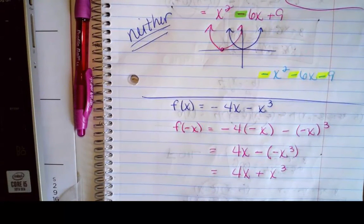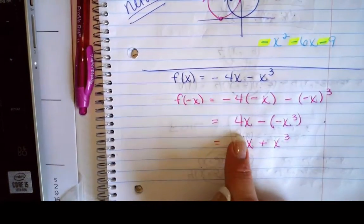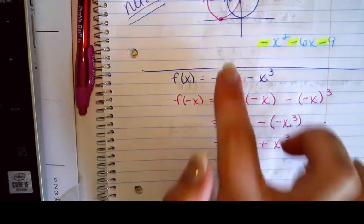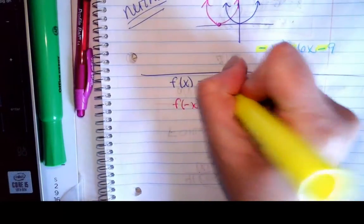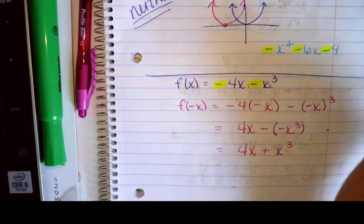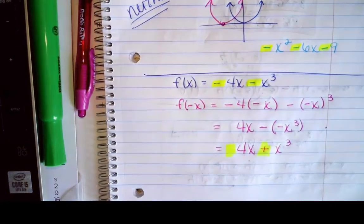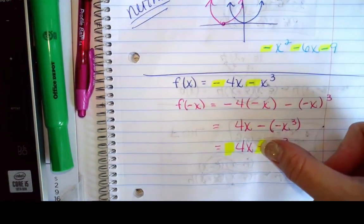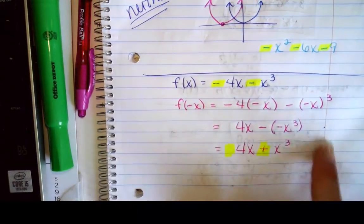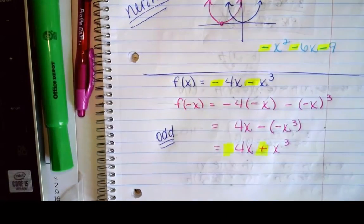Now I need to decide if it's even, odd, or neither. For an even function I would have gotten the exact same thing back — I'd need negative 4x and negative x cubed, but I don't have that. For an odd function, all the signs would change. I started with negative 4x and negative x cubed, and I ended up with positive 4x and positive x cubed. Since I changed the sign on x and got the complete opposite back, this is an odd function.